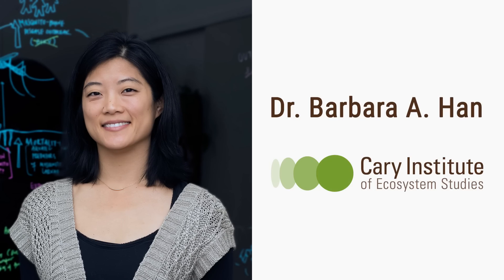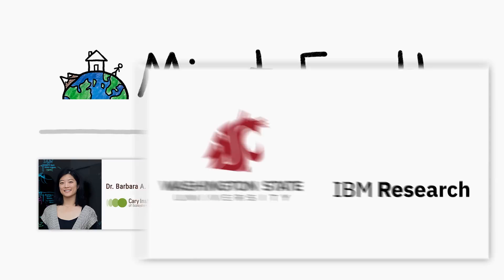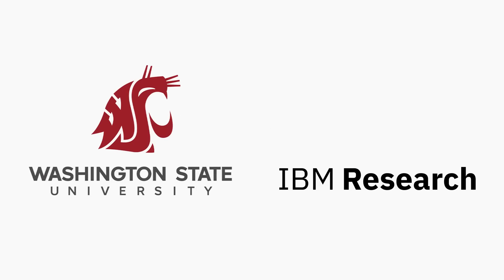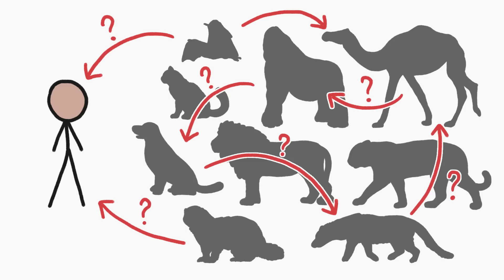Barbara Hahn from the Carey Institute of Ecosystem Studies and Drew Kramer from the University of South Florida, along with researchers from Washington State University and IBM Research, have all been funded by the US Department of Agriculture to study how viruses jump from one species to another, including humans. In particular, they're researching how all the different COVID variants may spread among different animal species.